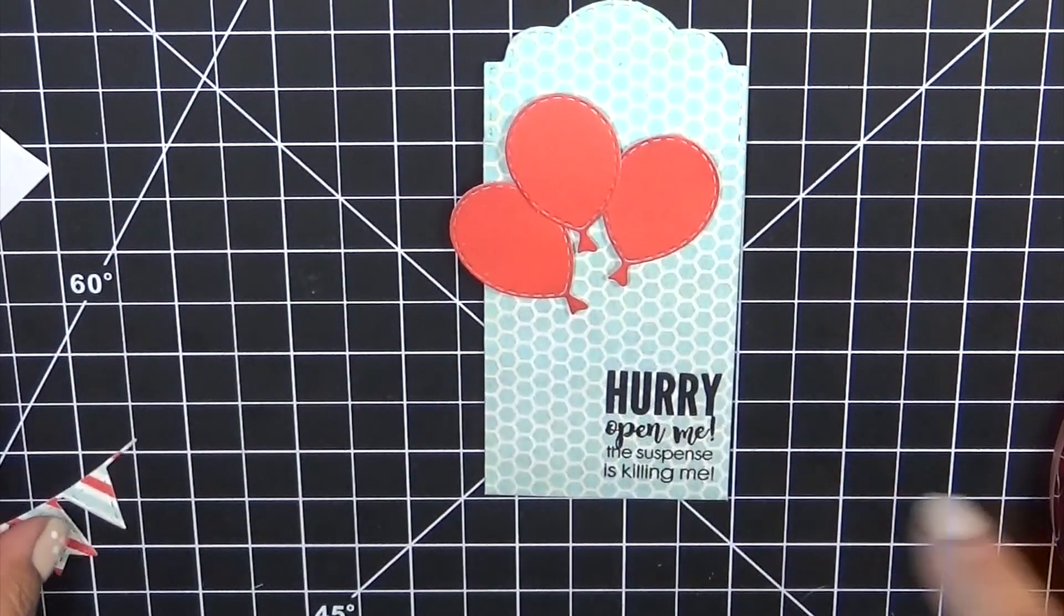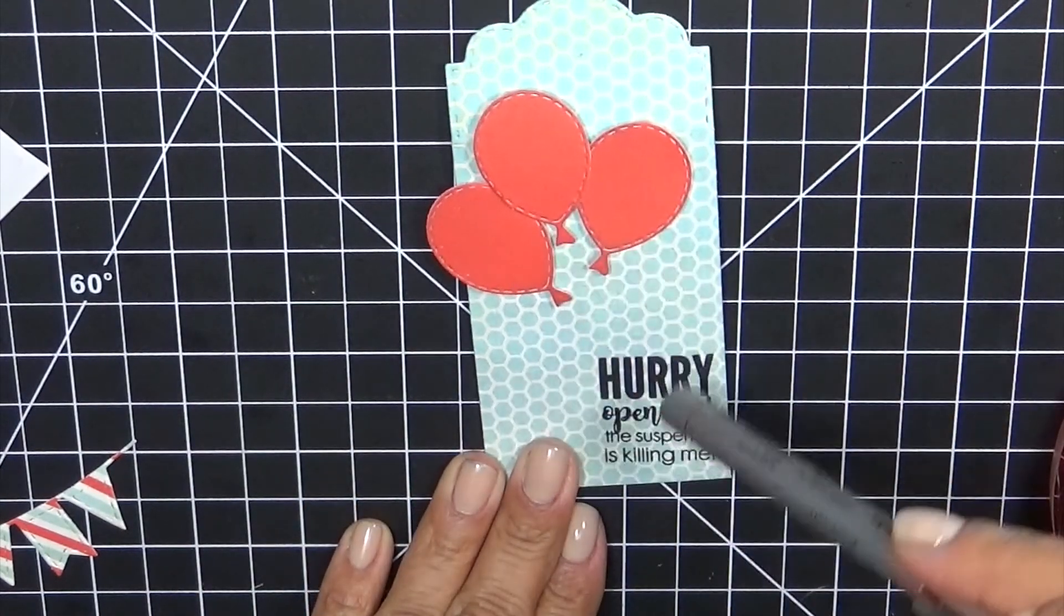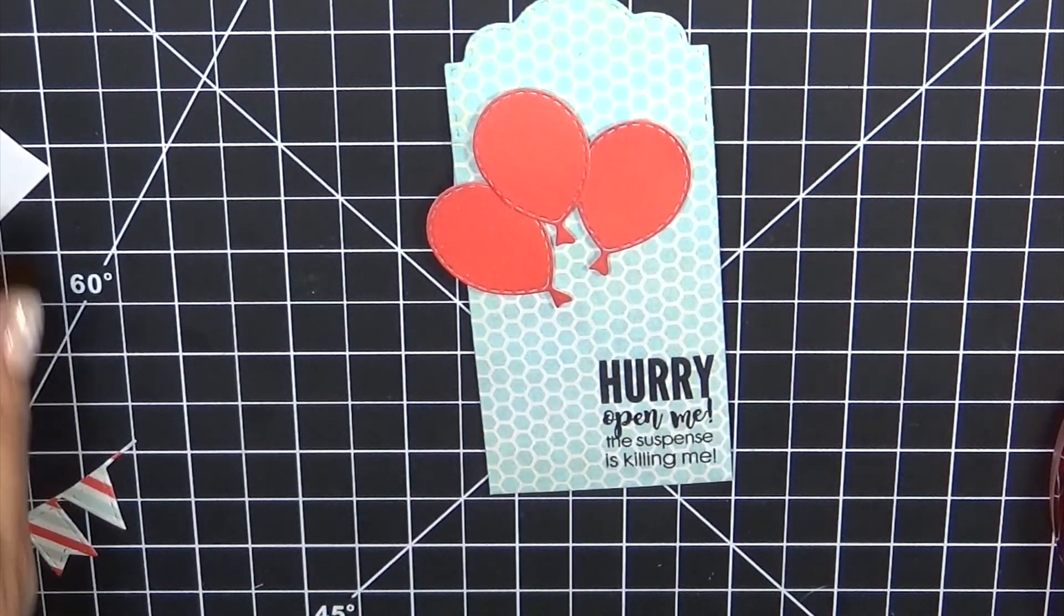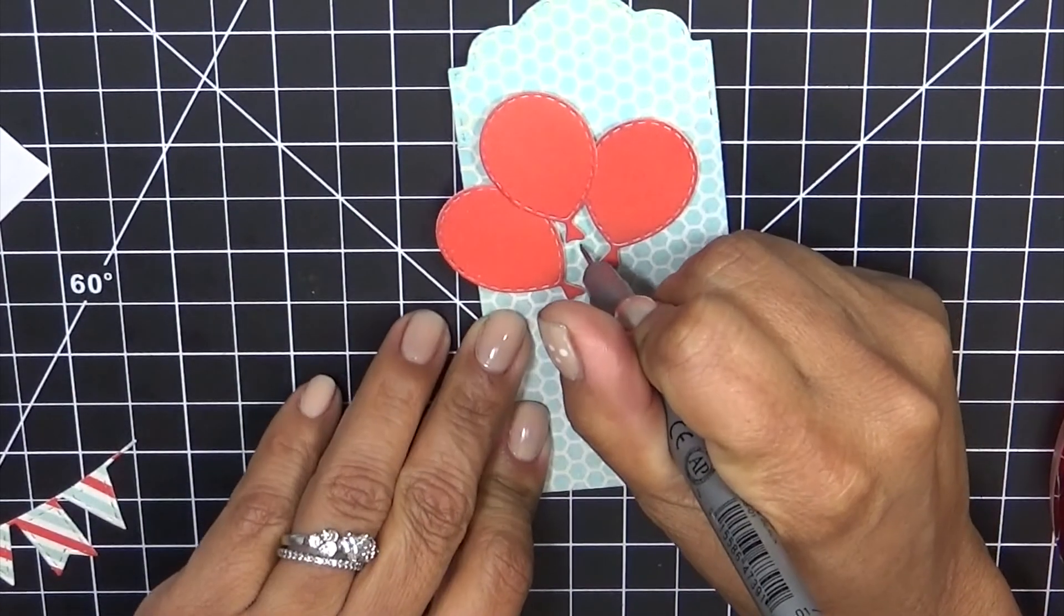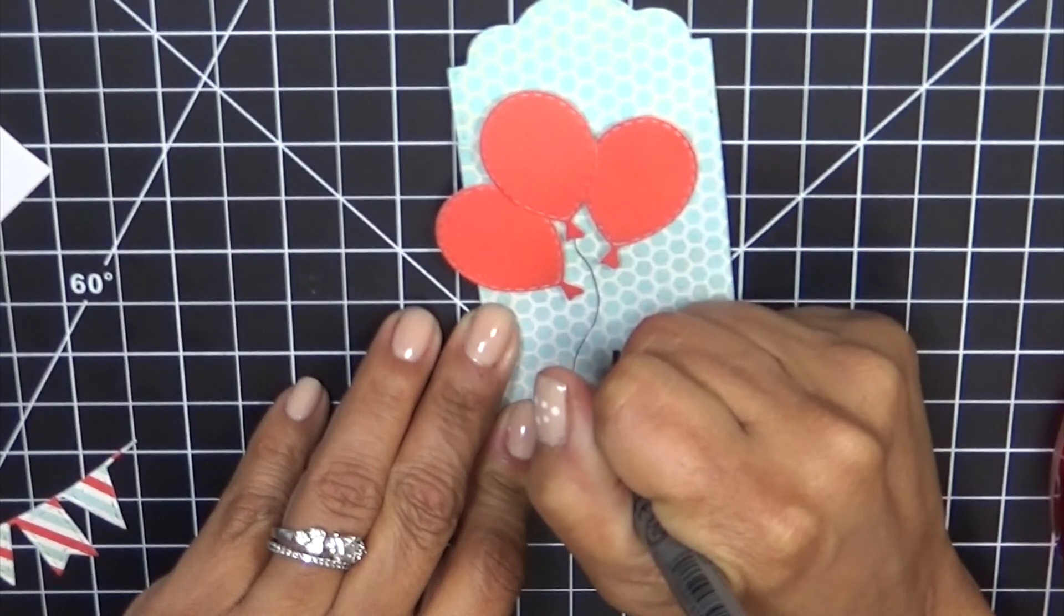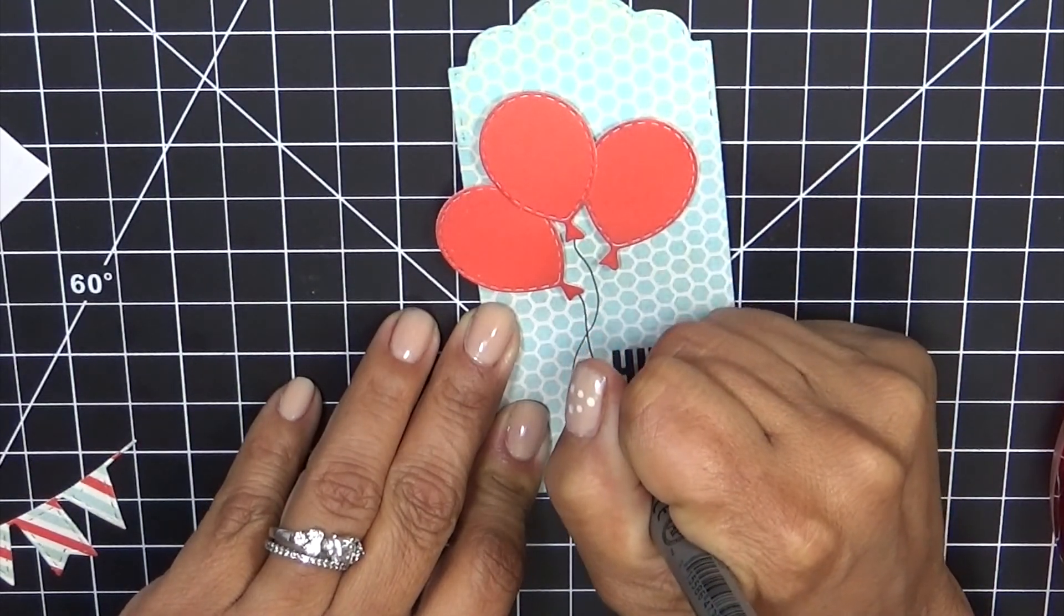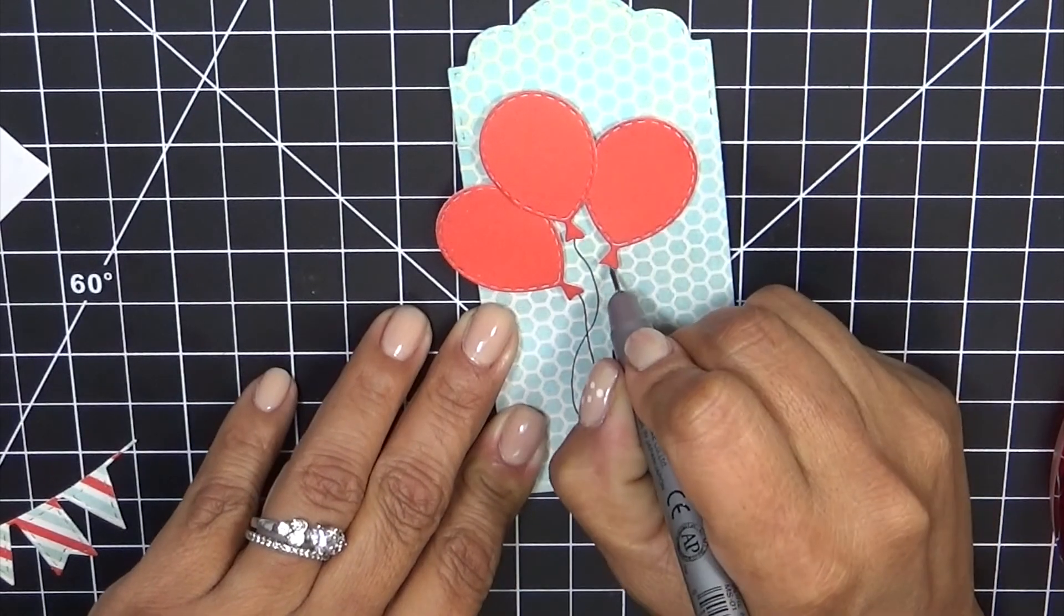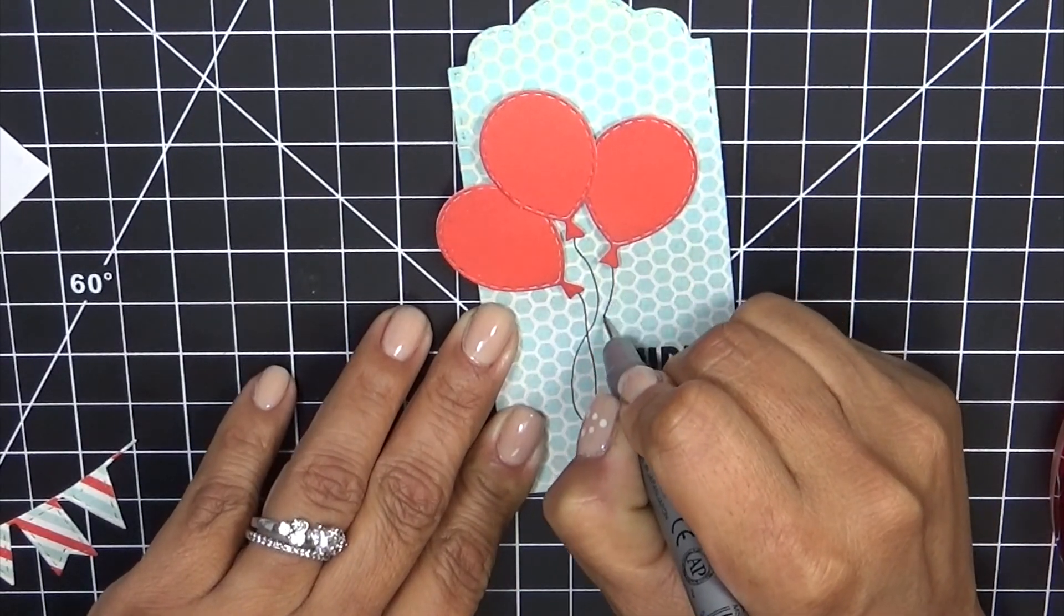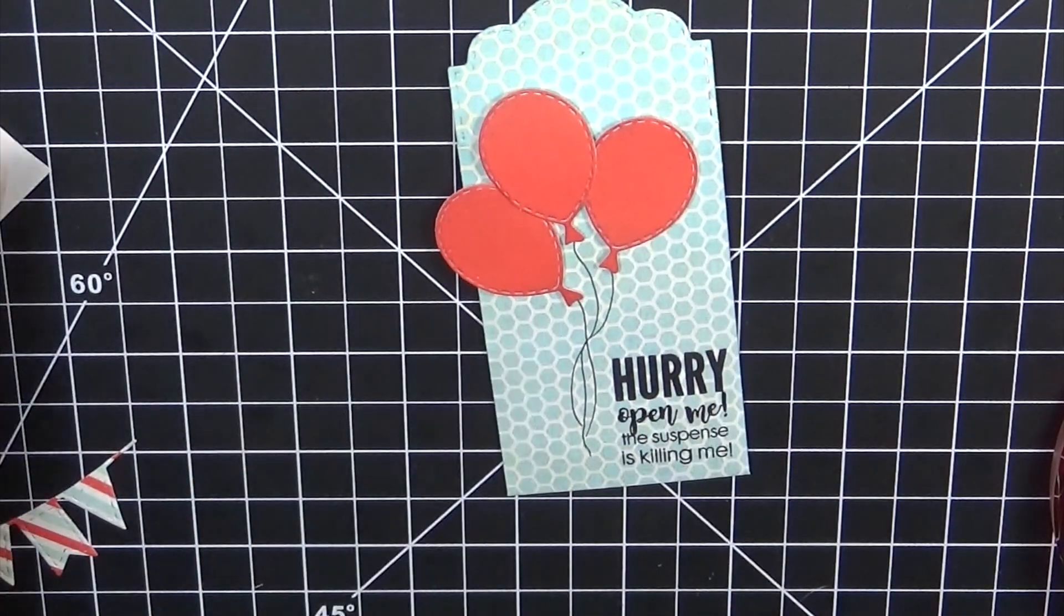And then what I'm going to do is, let's go ahead and we are going to draw the little line, you know, the little balloon string I should say. I'm just going to go ahead and just draw this down like so. It's kind of look like they are hanging from some strings there.